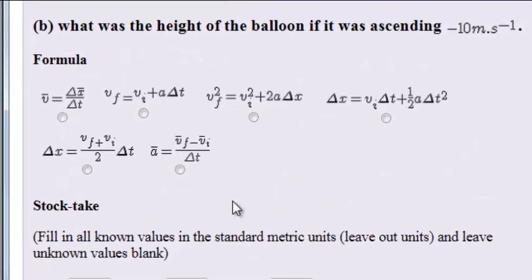Question B now asks, what was the height of the balloon if it was ascending at negative 10 meters per second?